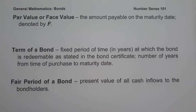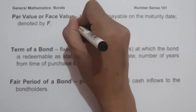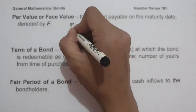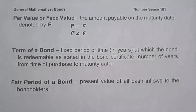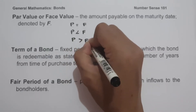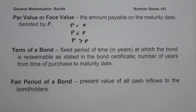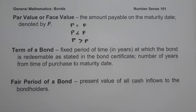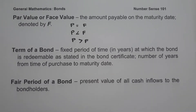There are three conditions to remember in relation to par value and the price of a bond. If the price of a bond is equal to the face value, the bond is purchased at par. If the price of a bond is less than the face value, the bond is purchased at a discount. If the price is greater than the face value, the bond is purchased at a premium. The term of a bond is the fixed period of time in years at which the bond is redeemable, that is, the number of years from time of purchase to maturity date. Lastly, the fair price of a bond is the present value of all cash inflows to the bondholders.